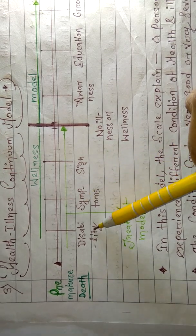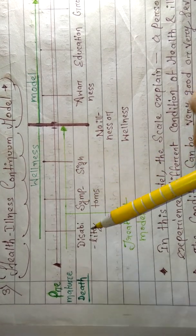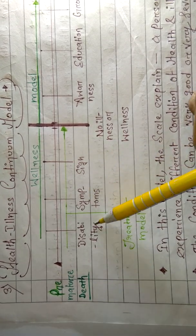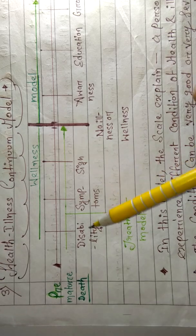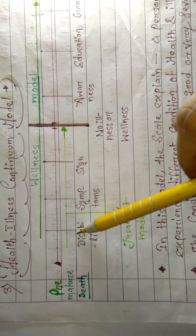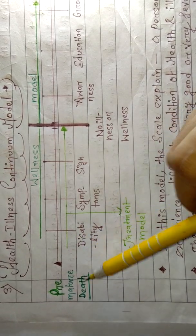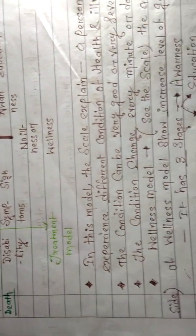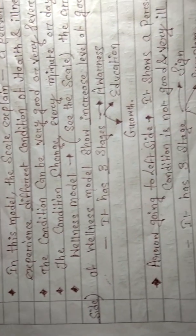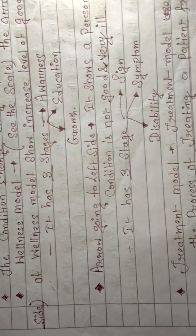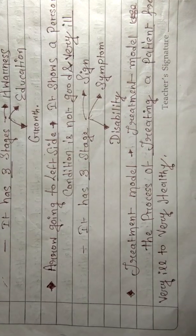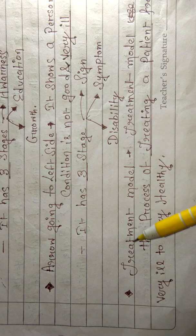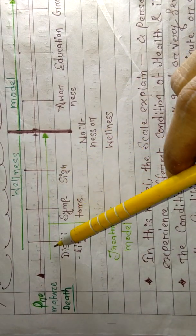After signs and symptoms get worse, the patient will be disabled — they will not be able to do any work, and they will go towards premature death. This is called the premature death arrow, or the arrow to the left side.